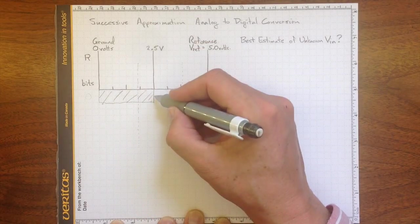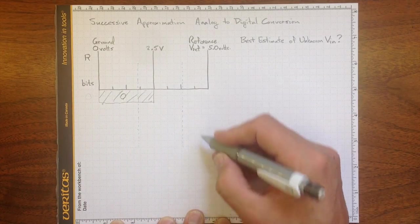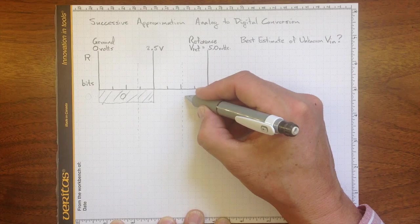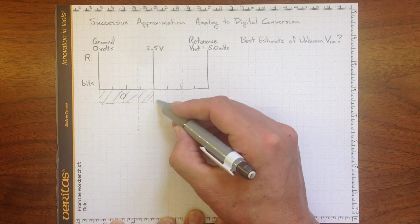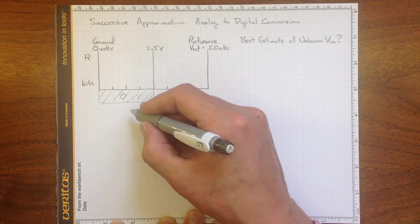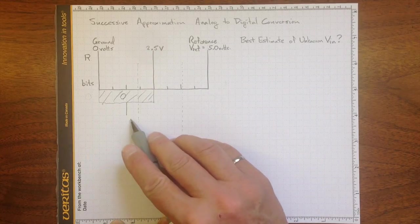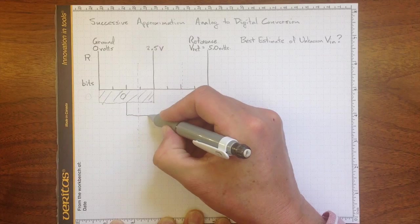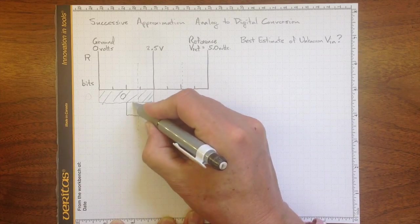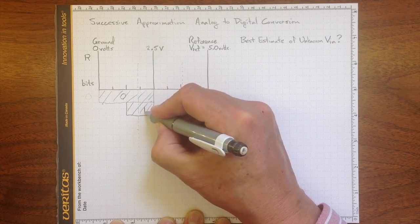So it was less than half, so let's represent that with a zero. If it was over here, we'd represent it with a one. Let's successively approximate. Let's split this region in half again and test it against a voltage that's halfway along. And it's greater than that voltage, so we know now it fits somewhere into this region here. And that was greater, so we'll call that a one.